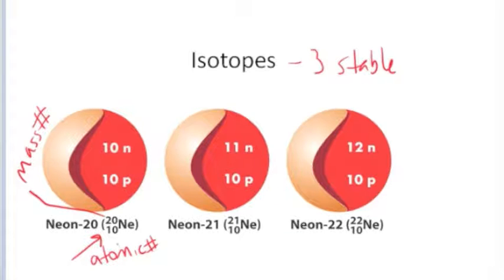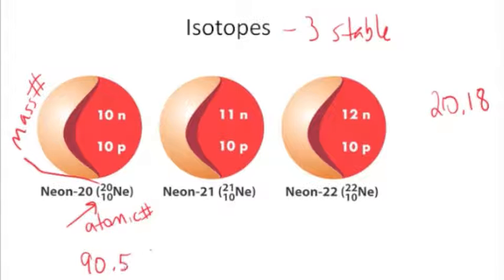On the periodic table, the reported atomic mass for neon is 20.18, which comes from the weighted average of the isotopes. If I were to collect neon from nature, neon 20 is the dominant isotope. 90.5% would be neon 20, 0.27% would be neon 21, and 9.23% would be neon 22.